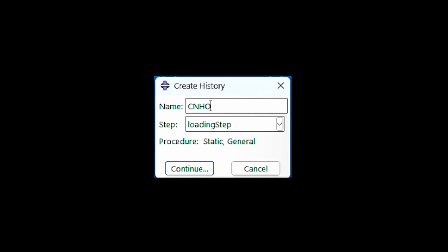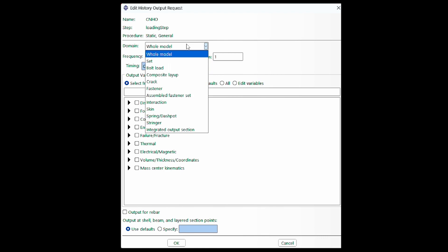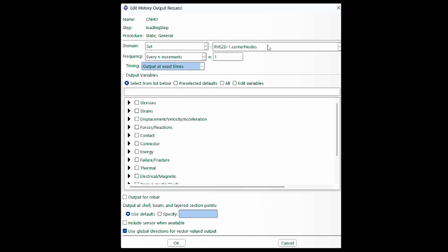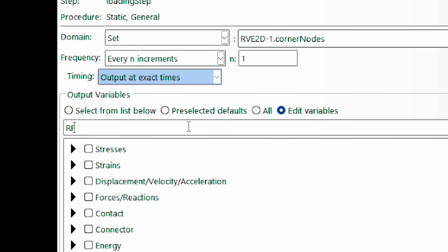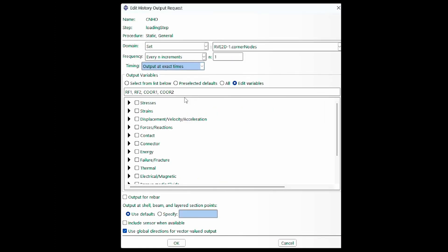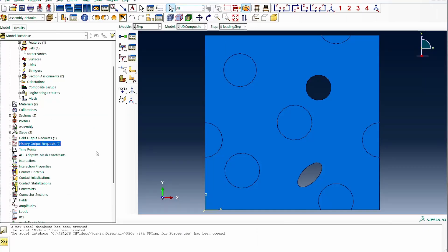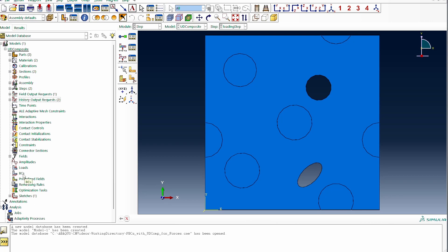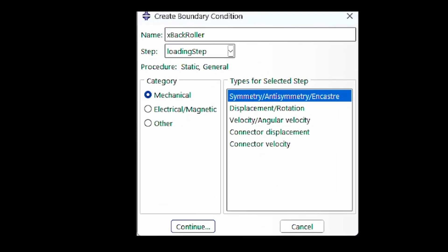Within the RVE of the 2D model, I've also created a set of the corner nodes. I need to track what is happening with that set in my history output, so I'll call it corner node history output. I'm going to be tracking that set of corner nodes, and I'm only interested in RF1 and RF2, which are the reaction forces in the X and Y direction, and the coordinate positions in X and Y.